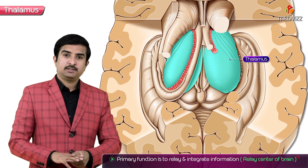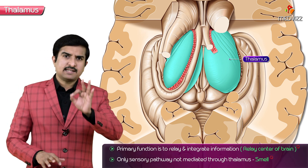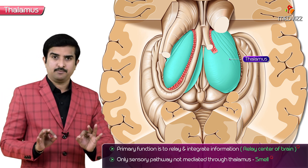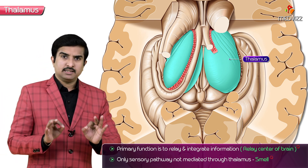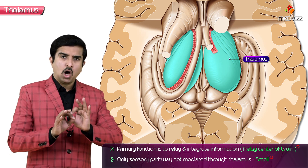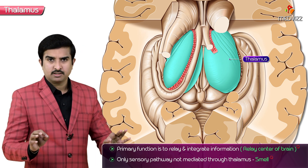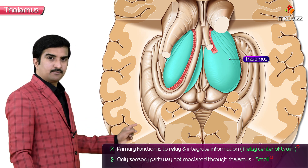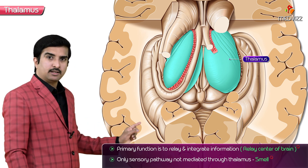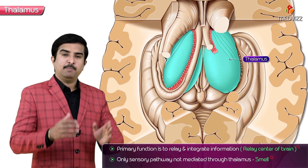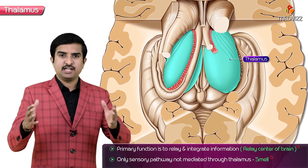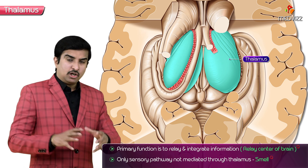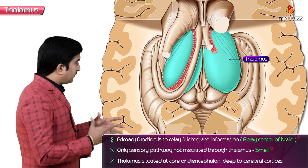The only sensory pathway not mediated through the thalamus is smell. Other than the sensation of smell, all other sensory information should be relayed, processed, and integrated in the thalamus before it reaches other higher centers of the brain.